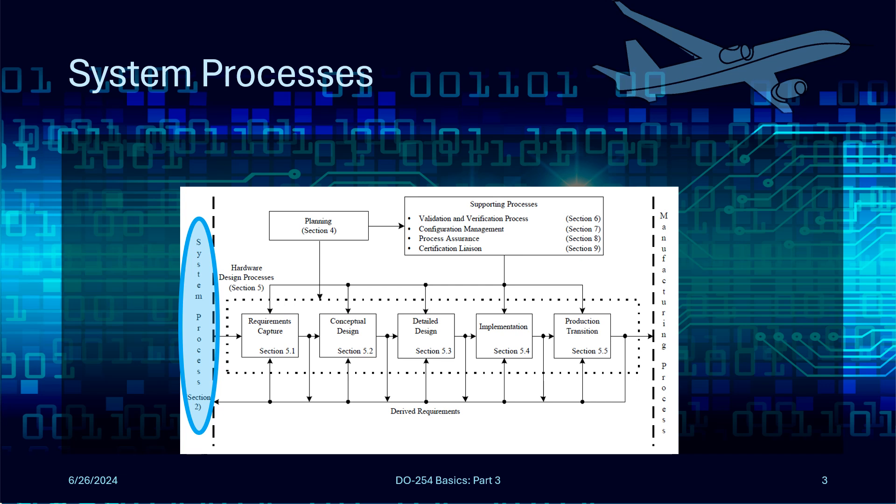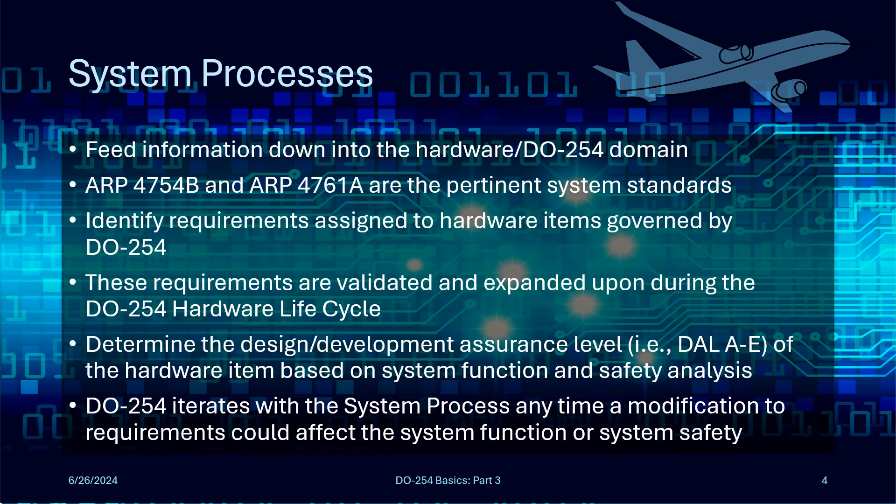Now let's start looking at this graphic piece by piece, starting with DO254's link to system processes. The system processes are shown on the far left, outside of the dashed line that represents the boundary of the DO254 process, but there are arrows going to and from what's called the hardware design processes. The system processes feed down into the hardware development or DO254 domain. The DO254 equivalent for systems is the combination of two documents: ARP 4754B and ARP 4761A.